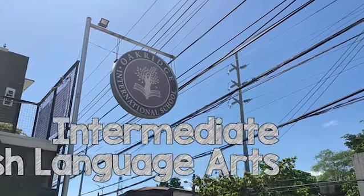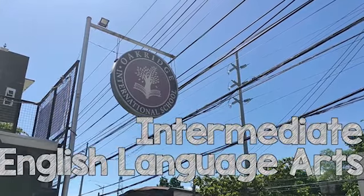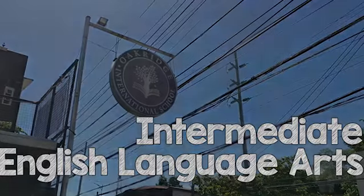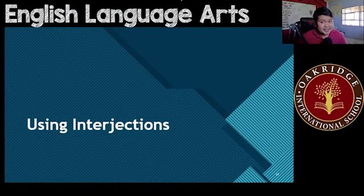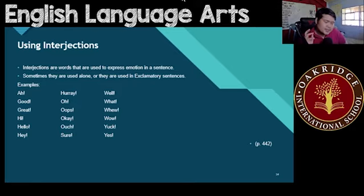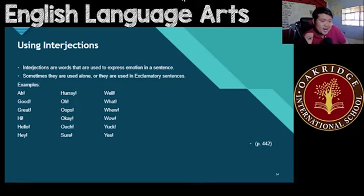Welcome to intermediate-level English language arts. Hi guys and welcome to English language arts grade 5. Our topic for today would be using interjections. Now, interjections are words that are used to express emotions in a sentence — usually strong emotions in a sentence.